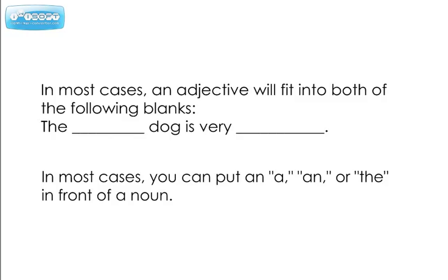Some words that won't work in that blank test are words that end with -er or -est, like bigger or biggest, or shorter or shortest. Those don't really fit in the blanks, but they'll still be adjectives. Some other words that won't work well are words that can be both adjectives and nouns, like the word 'light.' You could say 'the light dog is very light,' and that works, but you can also have 'a light' — they mean two different things. So in those cases, you'd actually have to read the sentence to decide which one it meant.